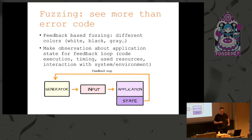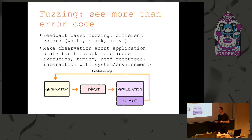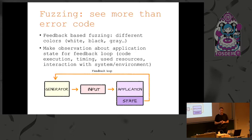From the testing perspective, we can think about fuzzing based on what we know about the application — similar to white box, black box, and gray box testing. This feedback loop also depends on what kind of fuzzing you're doing. In our example we will be doing white box testing, because we have a kernel we can compile, we can instrument the code, and then monitor the state of the application based on that information.